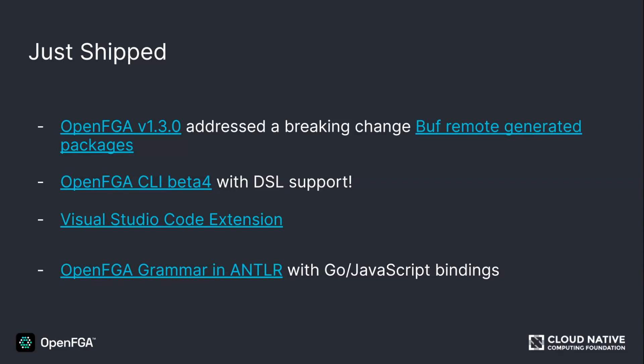We shipped a new beta of the CLI. This version has support for parsing and writing using the DSL format — we won't demo it again but I'll cover it in slides. Daniel was working on a VS Code extension and will demo that — I love getting proper syntax coloring in VS Code. We also released a grammar defined in ANTLR with bindings to Go and JavaScript. The idea is to use that as a new core grammar for everything, with bindings to other languages and use in the VS Code integration and server integration in the future.